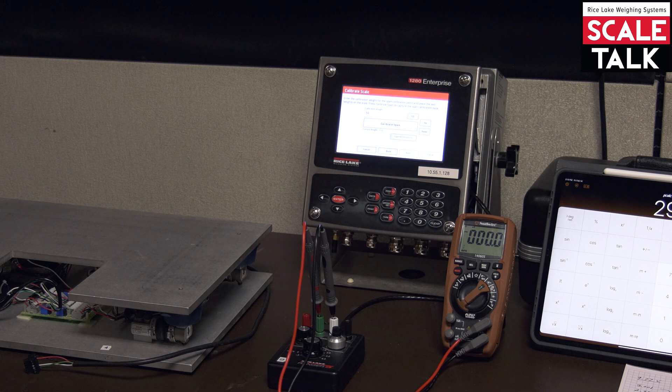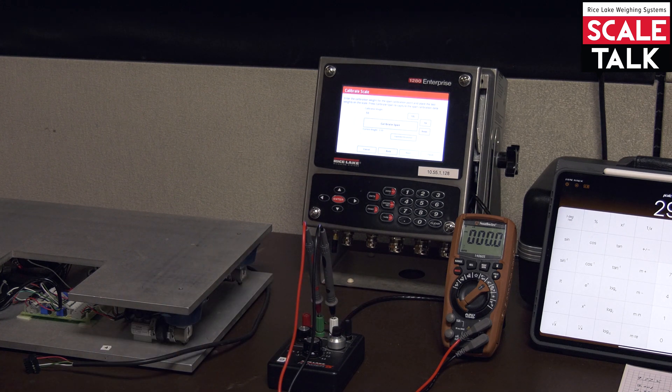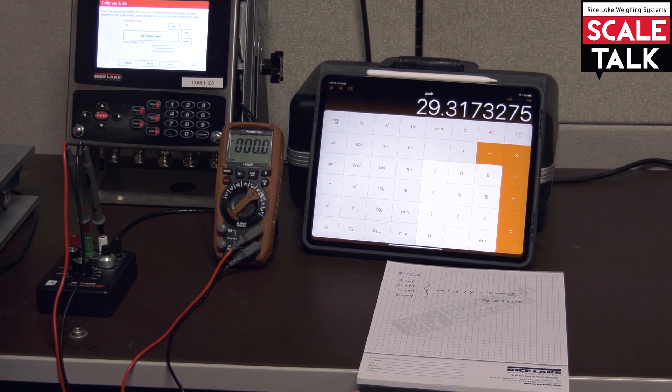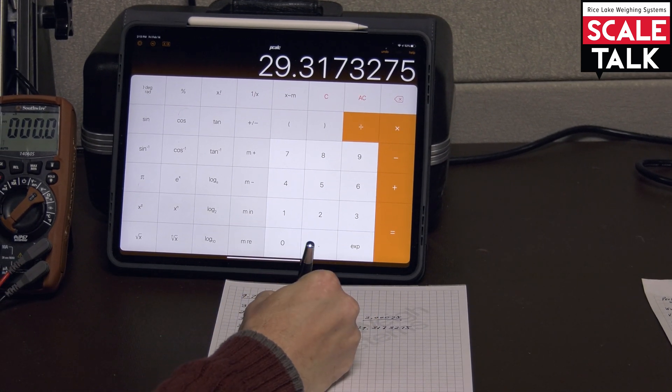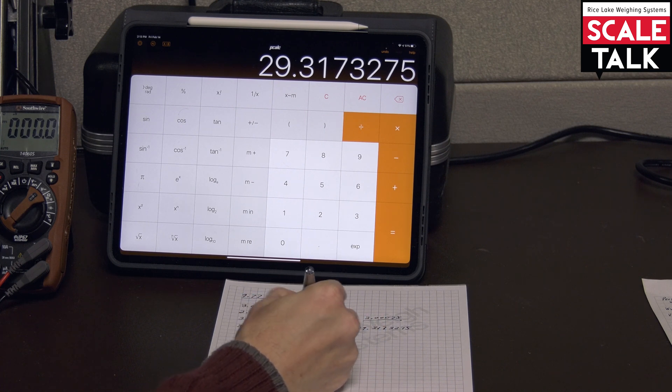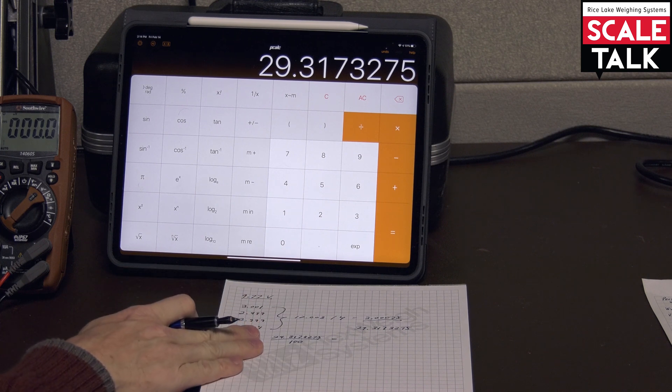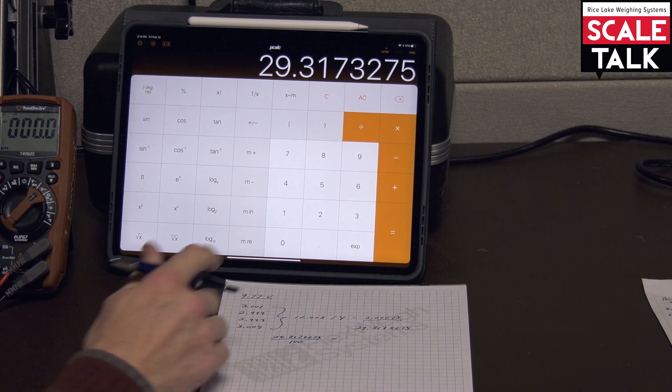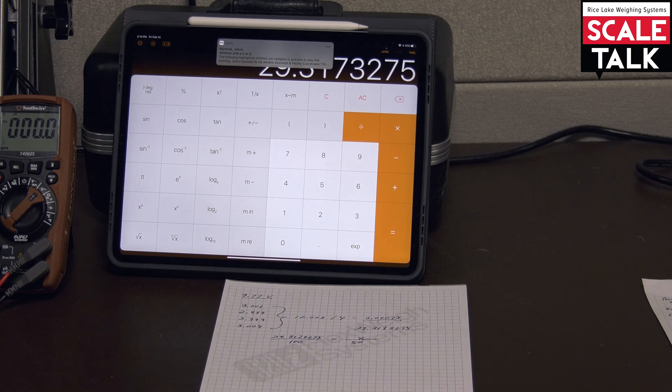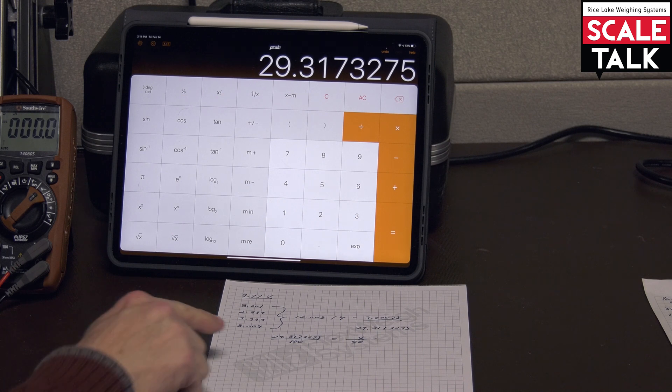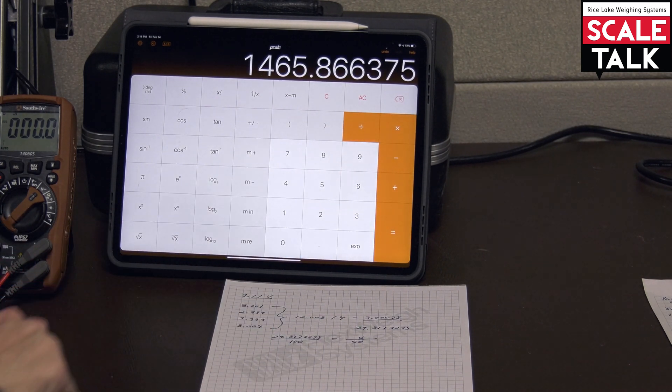And now we need to know well what would our millivolt per volt output be if we actually were putting 50 pounds on the scale. So that's where a little bit more math comes in here. So if we take a look at this we set up a small ratio where we cross multiply. Try to think back to algebra in high school. And we say that 29.3173275 if that corresponds with a full 100 pounds, remember that's the build, then that particular ratio needs to be the same as whatever that millivolt value is. We don't know what that is yet. So that's our variable, our x, related to 50 pounds. So what we're going to do is go ahead and cross multiply here. So we've got this 29.3173275 which is still on my display. We're going to go ahead and multiply that by 50.